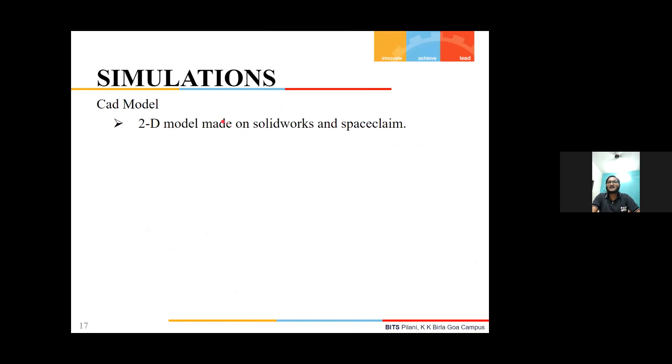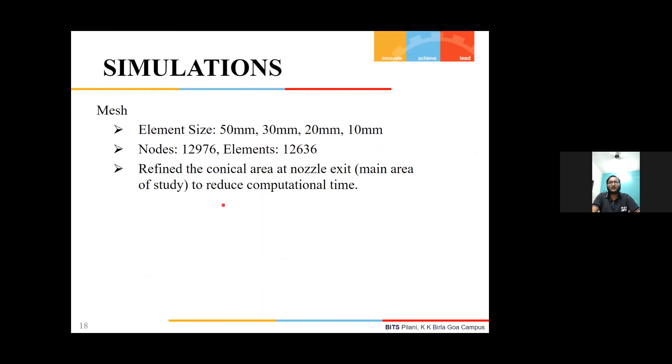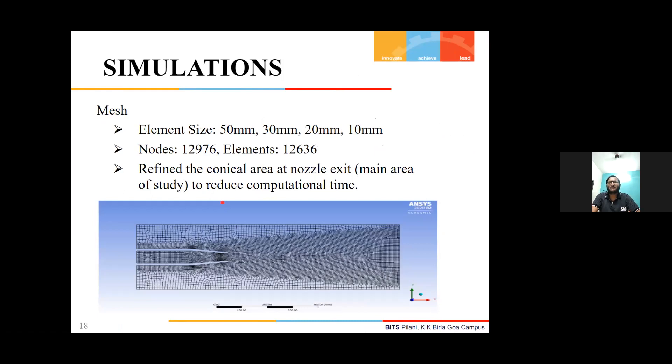The simulations were started by making a 2D CAD model of the nozzle on SolidWorks, and later some rendering was done in SpaceClaim. This is the SolidWorks geometry that we made, and later it was made into a 2D geometry in SpaceClaim. Then we did the meshing in Ansys, choosing element sizes at different locations from 50mm to 30mm, 20mm, 10mm. Nodes and elements were around 13,000.